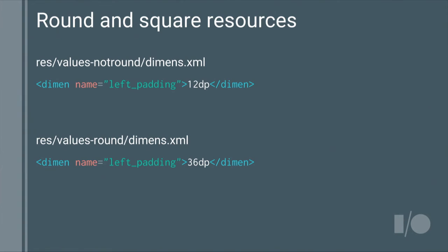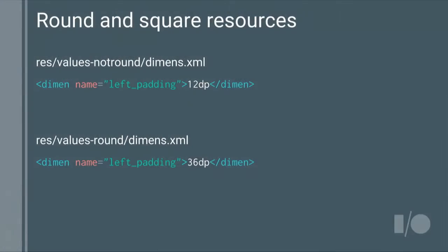We added new resource qualifiers to help you build for both round and square devices. Under your resources, a values-notround folder defines things for square screens — for example, a left padding of 12dp. On round screens you want to move content in further, so in a values-round folder you override the left padding to 36dp. At runtime, the application chooses the appropriate value. This applies not just to the values folder but to anything in the resource directory — for instance, you can use layout-round for a completely different layout on a round device.